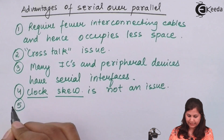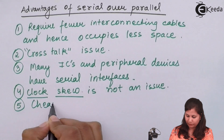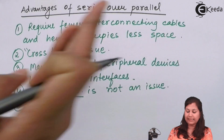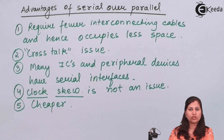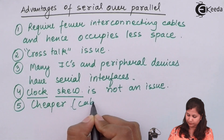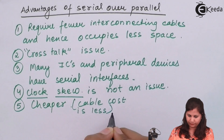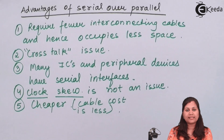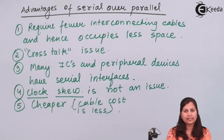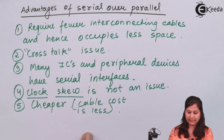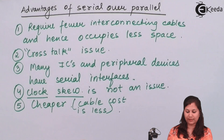Serial communication is cheaper than parallel communication because fewer interconnecting cables are required, so cable cost is less. For shorter distances we prefer parallel transmission, whereas for long distances we prefer serial transmission of data. These are the advantages of serial transmission over parallel transmission.